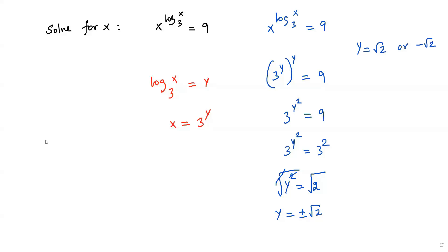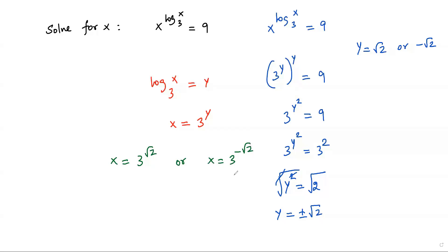The target of the question is to solve for x, where x is equal to 3 to the power y. We got the value of y as square root of 2 or negative square root of 2. If I plug in square root of 2 for y, I get x is equal to 3 to the power square root of 2. Or if I plug in negative square root of 2 for y, I get x is equal to 3 to the power of negative square root of 2. So we get two values for x.